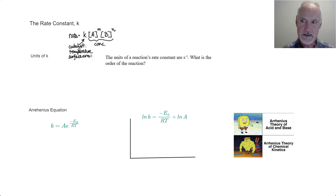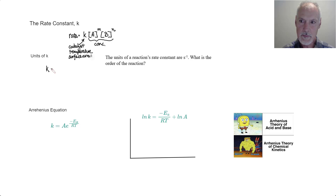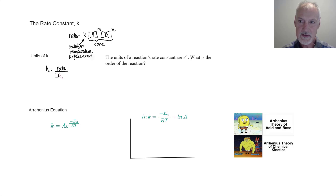Let's look a little bit more closely at the units of the rate constant. To do that, I'm going to rearrange this expression. If we want to isolate the rate constant by itself, we would have the rate of the reaction on top, and then on the bottom the concentration of A to some exponent and B to some exponent.